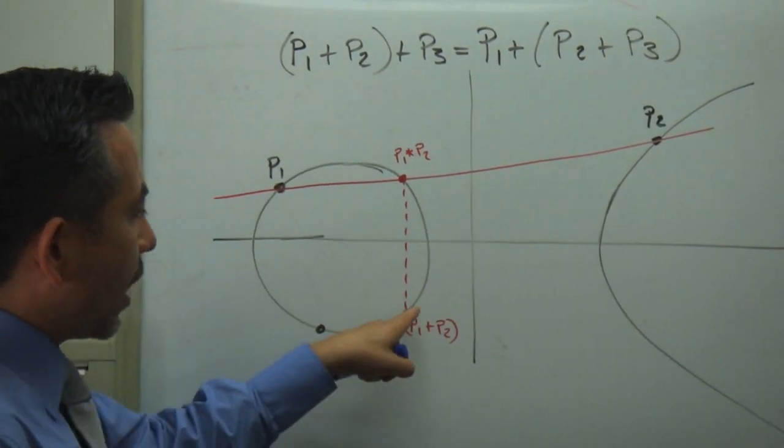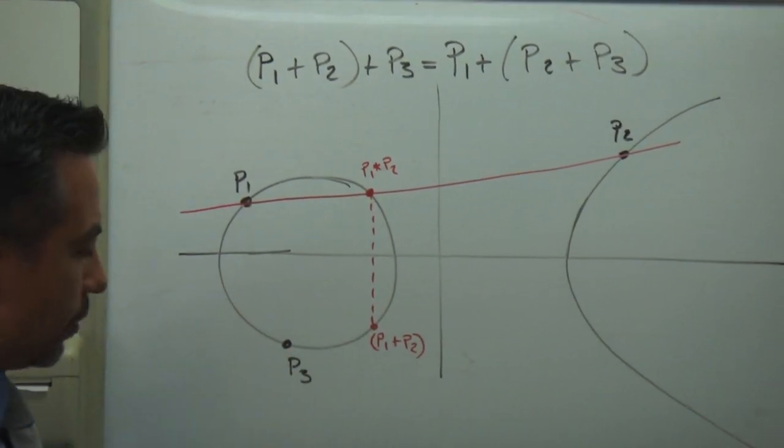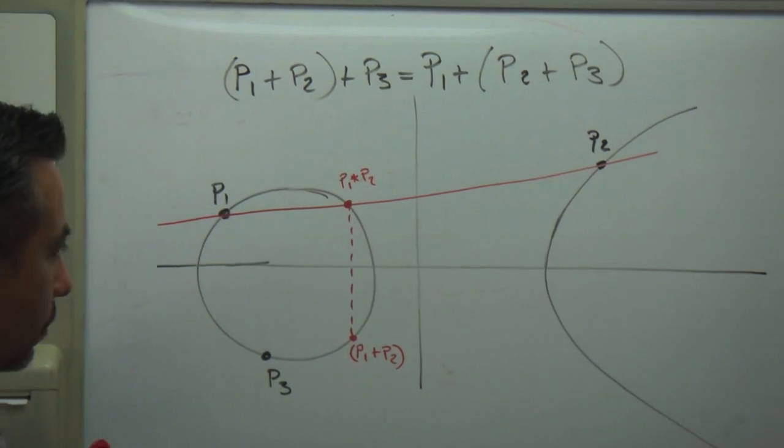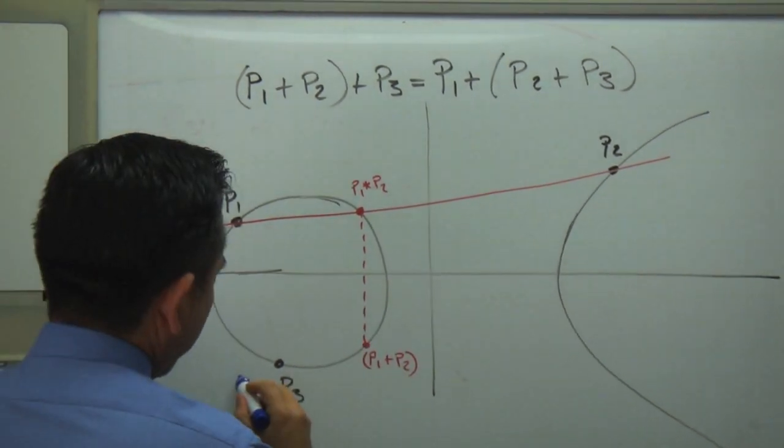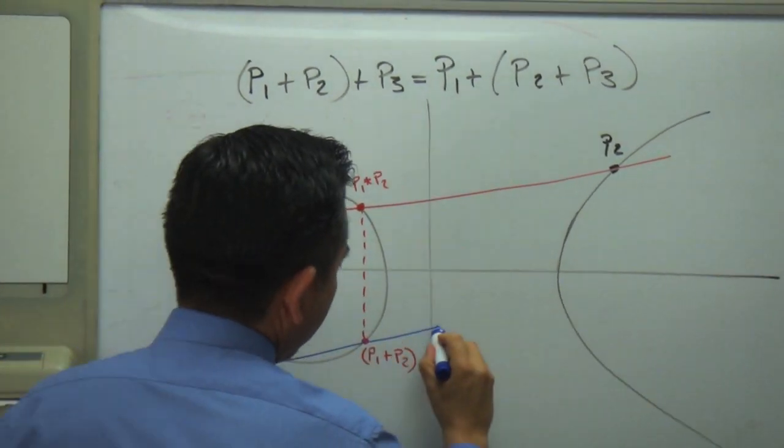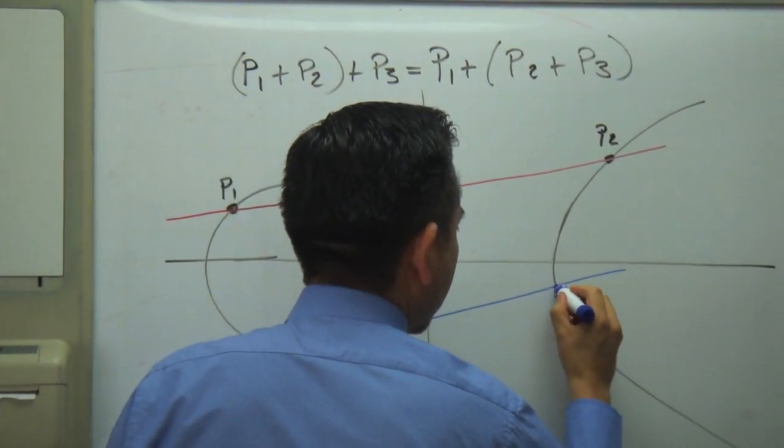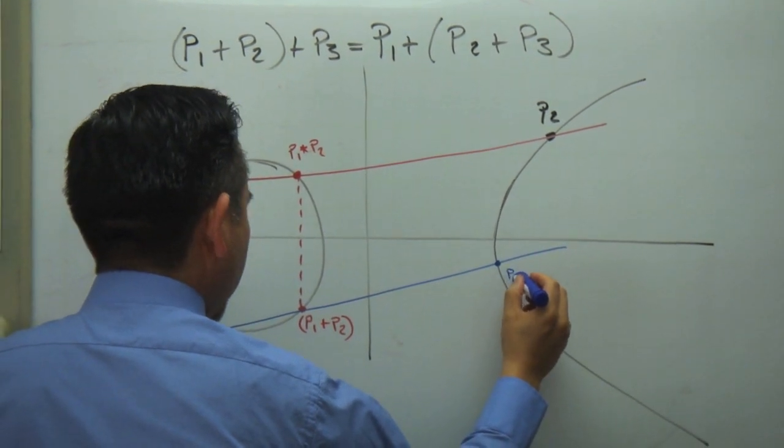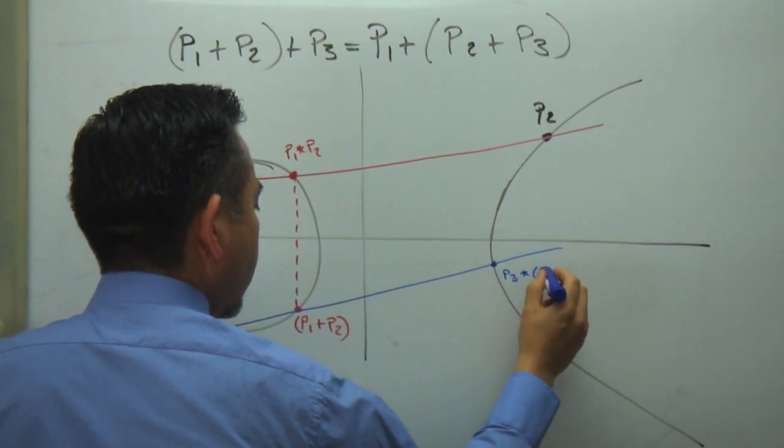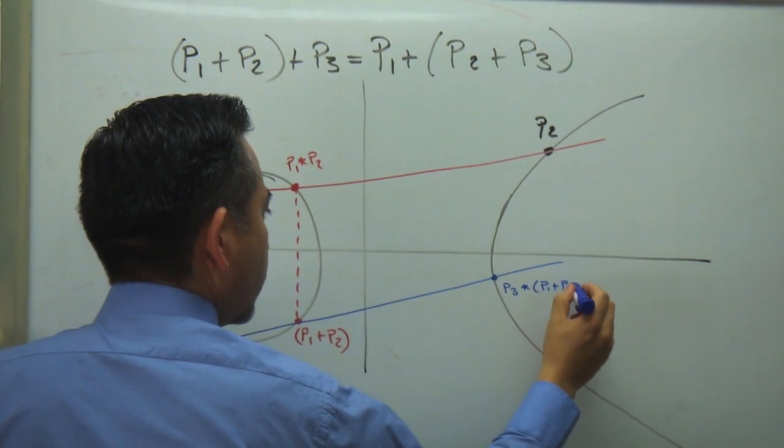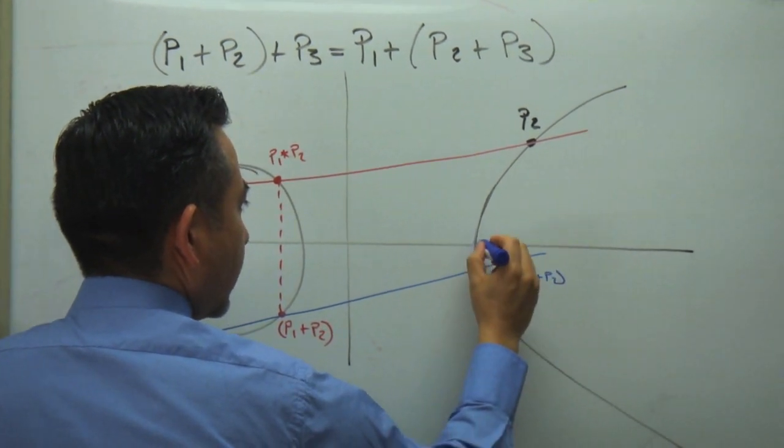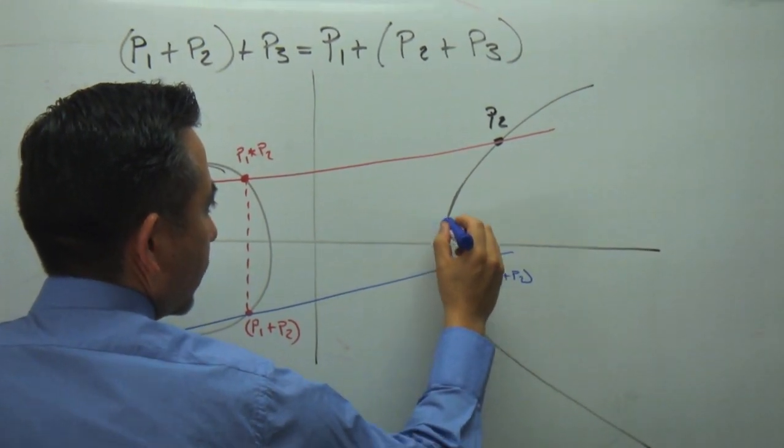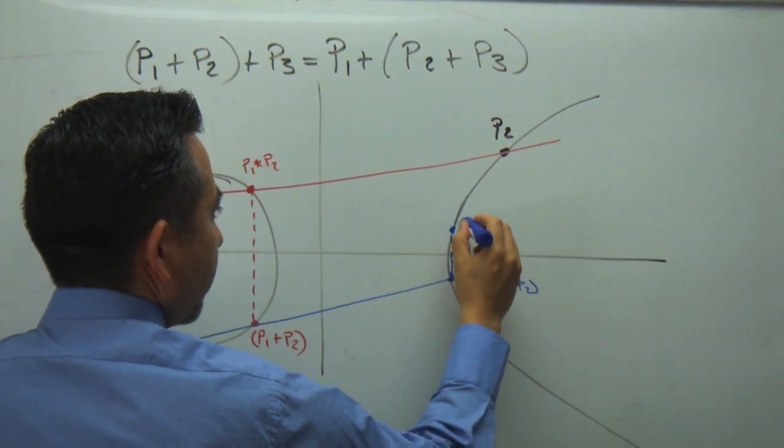Now, I will add to this point P3. So if I add these two points, I put a line crossing this, I intersect at this point. So this point is P3 ⊕ (P1 + P2), the special operator, and the reflection is, this is the reflection.